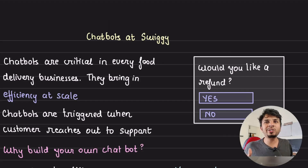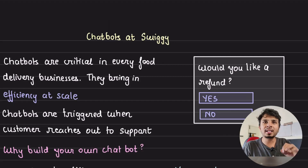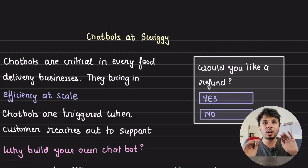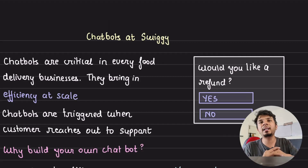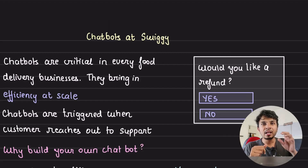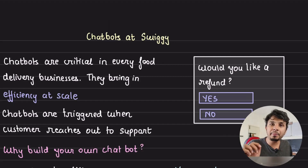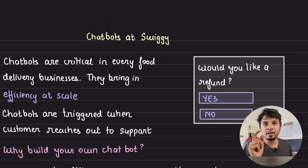We all love food but are lazy to go out to a restaurant, and this gave rise to food delivery startups like Swiggy and Zomato. Chatbots are essential for them as they resolve most customer complaints without spending a lot of money on customer service representatives. In this video we look at how Swiggy designed their chatbots to achieve business efficiency at scale, and dive deep into their tech architecture and key components to consider while designing it.